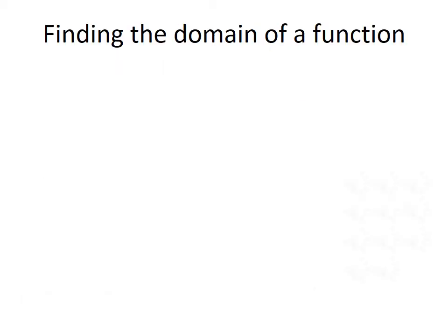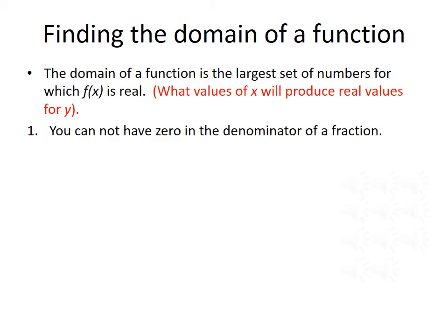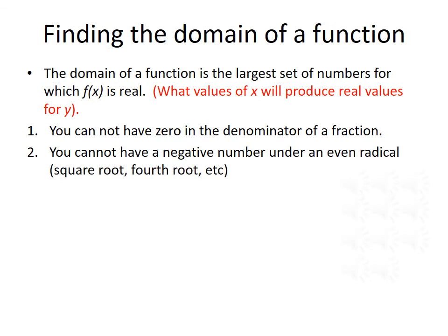Now, let's talk about the domain of a function. The domain of a function is the largest set of numbers for which f(x) is real — in other words, what values of x will produce real values for y. To find the domain, we want to keep two things in mind: you cannot have a 0 in the denominator of a fraction, and you cannot have a negative number under an even radical — so the square root, the fourth root, the sixth root, etc. As long as we avoid these two things, our domain will be all real numbers.